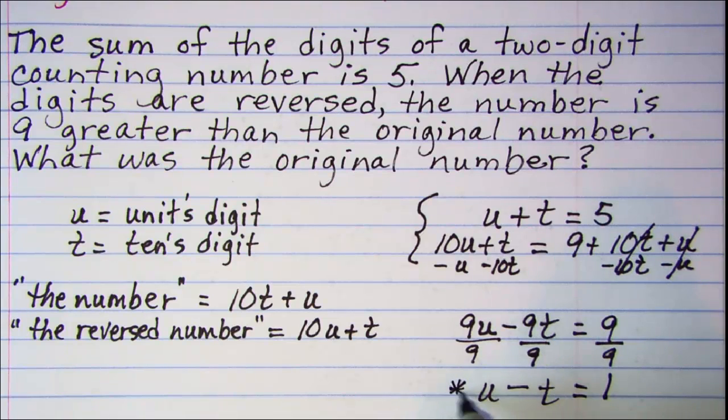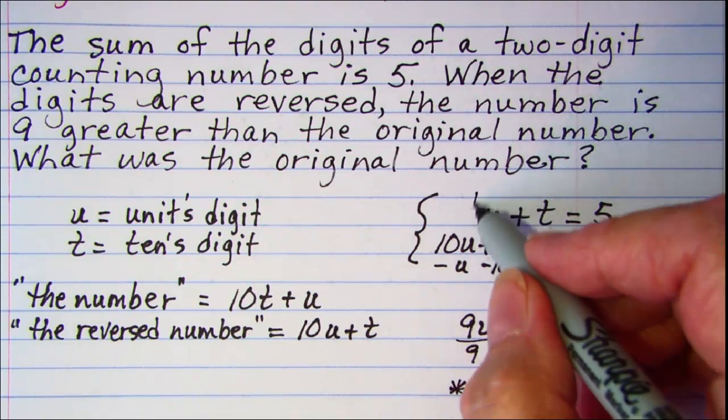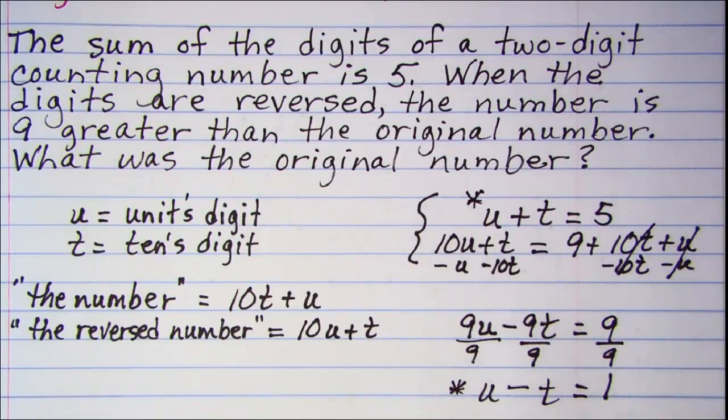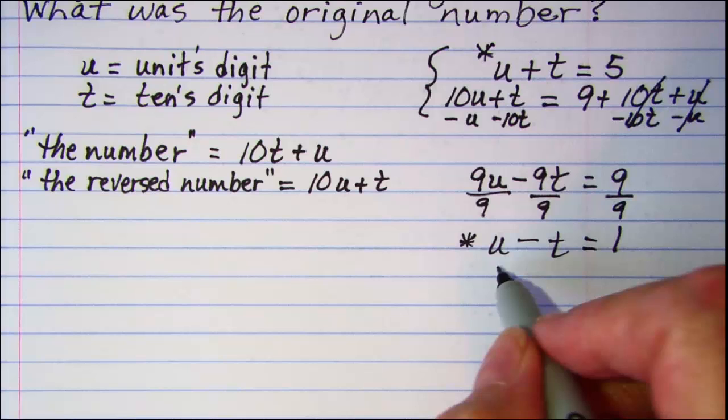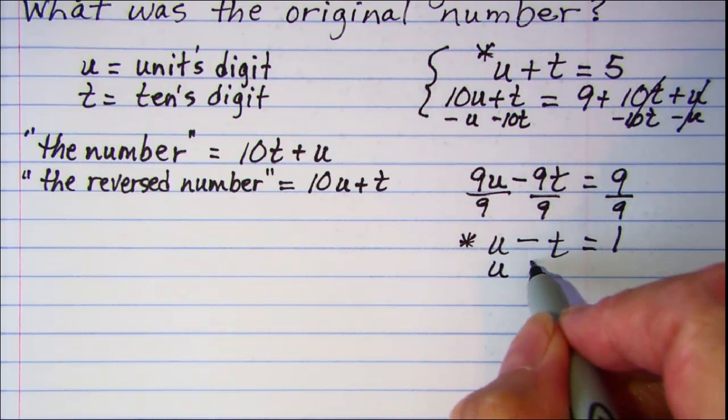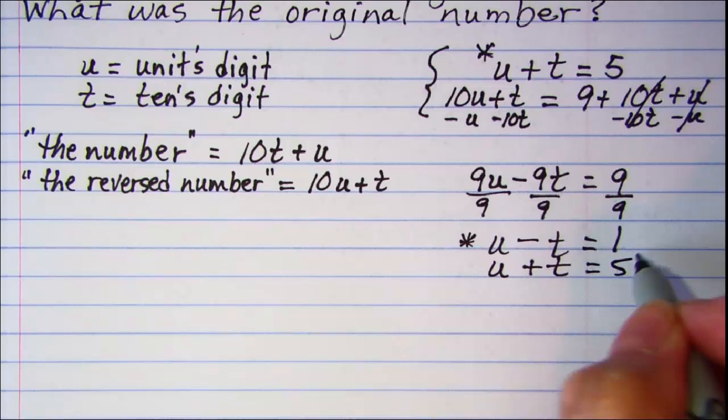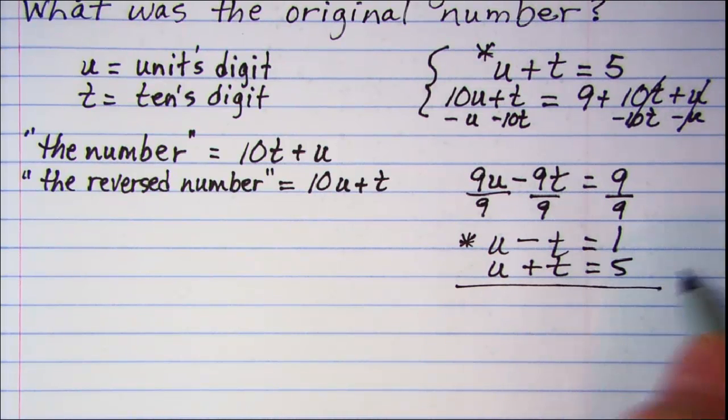I'm going to simplify this by dividing through by 9. So, I have u minus t equals 1. So, now I'm going to use that equation and this equation. Let me write this one right below here.